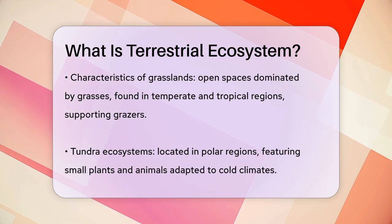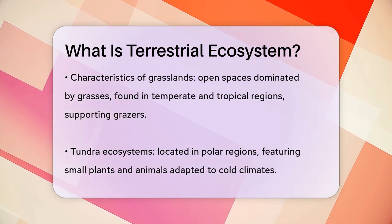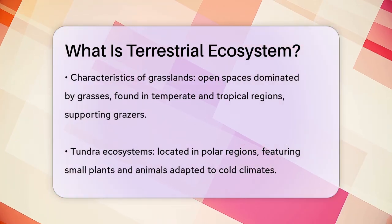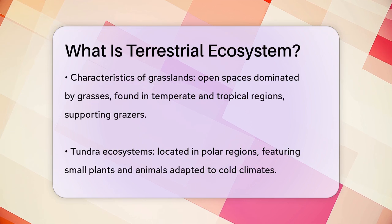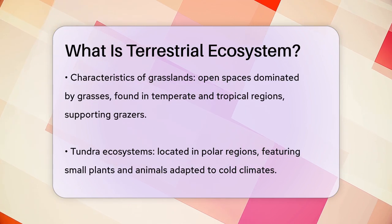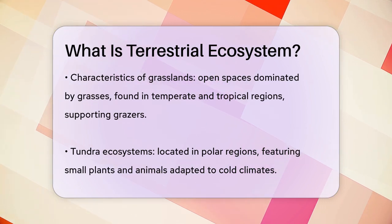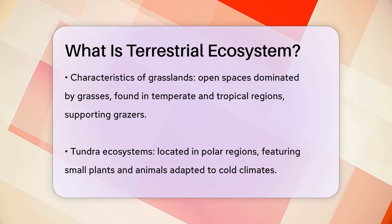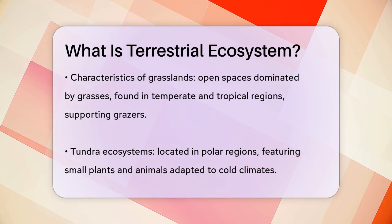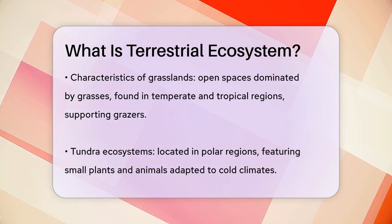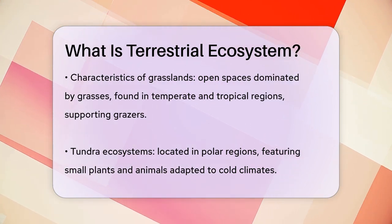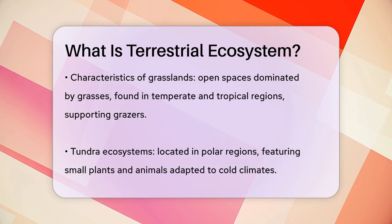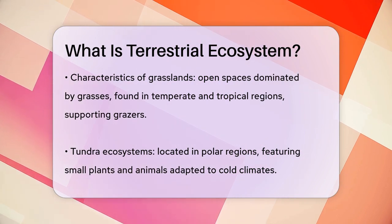Tundra ecosystems are found in polar regions and are known for their harsh, cold conditions. Here you'll find mostly small plants like lichens and mosses, and animals adapted to the extreme cold, such as reindeer and arctic foxes.